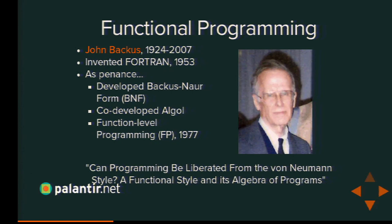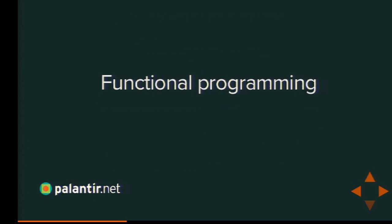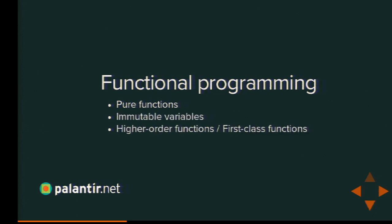In functional programming, what you are defining is your algorithm — not steps to accomplish a task, but the relationship that defines a task. Actually turning that into steps is not your problem; that is what a compiler is for. Functional programming has three core concepts we're going to go over: pure functions, immutable variables, and higher-order functions. Higher-order functions and first-class functions are technically different things to mathematical purists, but they're close enough for our purposes that I'm going to treat them as the same thing.